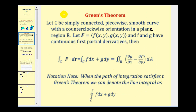If C is a simply connected piecewise smooth curve with a counterclockwise orientation in a plane region R, and our vector field with components F and G have continuous first partial derivatives, then the line integral — written as F dotted with dr or in differential form — is equal to the double integral over the region of the partial derivative of G with respect to x minus the partial derivative of F with respect to y, dA.